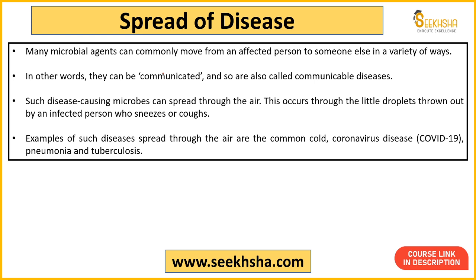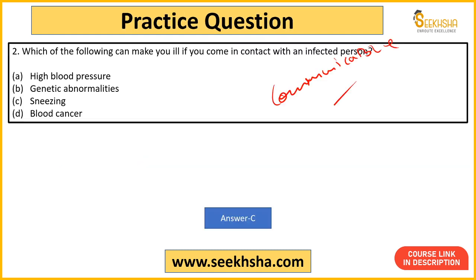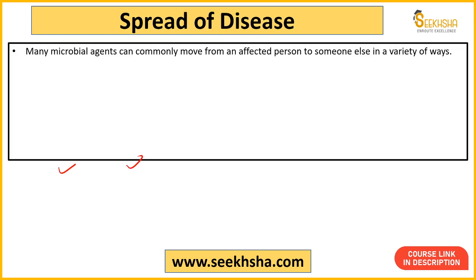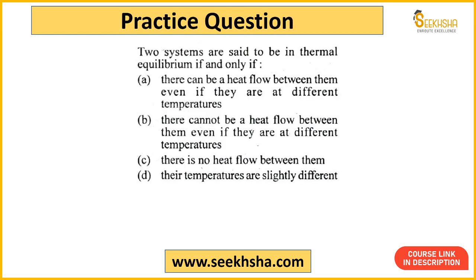Yeh jo fluids hain woh itne microbial hote hain ki yeh air ke andar easily spread ho jaate hain - bahut chhote droplets hote hain, even not visible with your eyes. Examples: common cold, corona, pneumonia, tuberculosis - yeh saare communicable diseases hain. Yaad rakhna pneumonia bhi spread hota hai, TB bhi spread hota hai. Agar question mein pneumonia bhi option mein ho toh use eliminate mat karna - pneumonia bhi communicable disease hota hai.